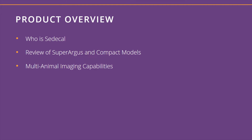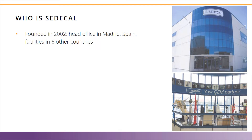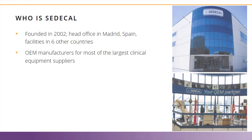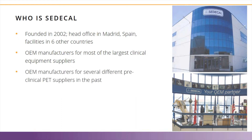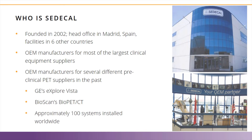CETECAL's head office is located in Madrid, Spain. It was founded in 2002 and has facilities in six other countries. For nearly 20 years, CETECAL has been manufacturing equipment for most clinical equipment suppliers as an original equipment manufacturer, or OEM. CETECAL has also been manufacturing preclinical PET systems sold by GE as their Explore Vista system, and by Bioscan as their BioPET CT system. There are approximately 100 of these branded systems installed worldwide.